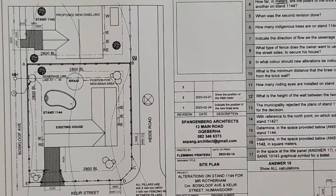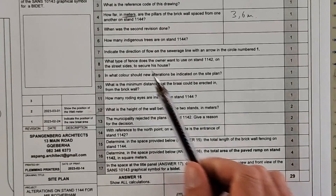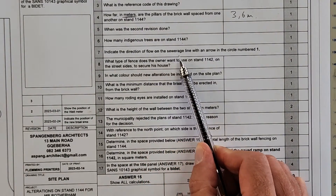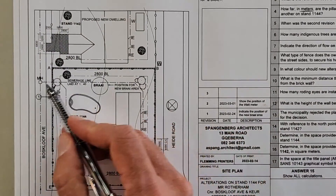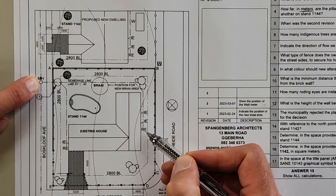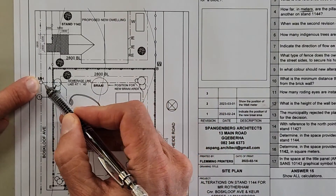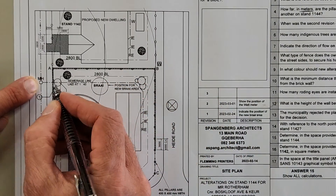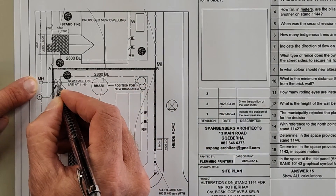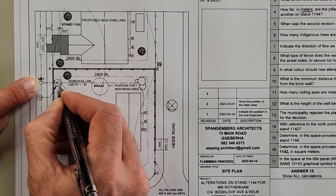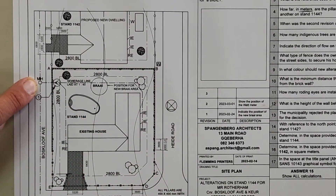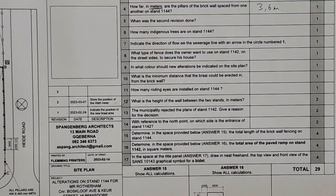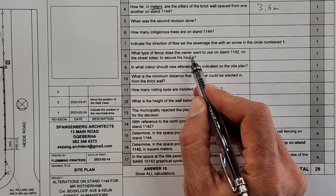Indicate the direction of flow on the sewer line with an arrow in the circle numbered one. There's the manhole — the direction of flow is always going to be towards your sewer. Make sure you put in an arrow in the direction of flow towards the sewer.